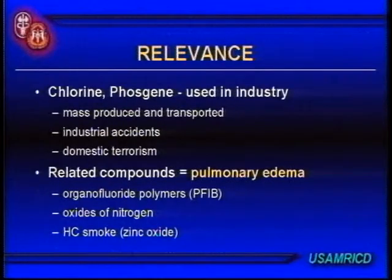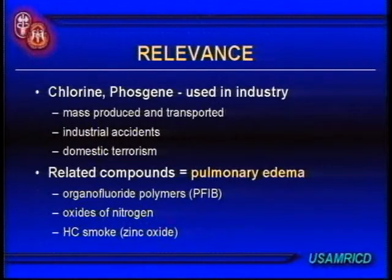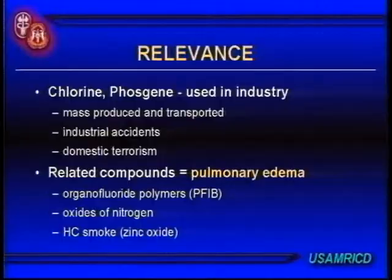Why do we care about chlorine and phosgene anymore? After all, they're World War I gases and we'll probably never see them again on the battlefield. Well, we might — the battlefield has obviously changed from that fixed-piece kind of battle. But we have other concerns: we're worried about industrial accidents and terrorism, and both of these agents are ubiquitous in the chemical industry. Both chlorine and phosgene are used extensively as precursors for many high-tech materials we use every day. All the plastics around us are produced using chlorine or phosgene as a precursor, and many rail cars full of both of these gases as liquid move through this country every day.